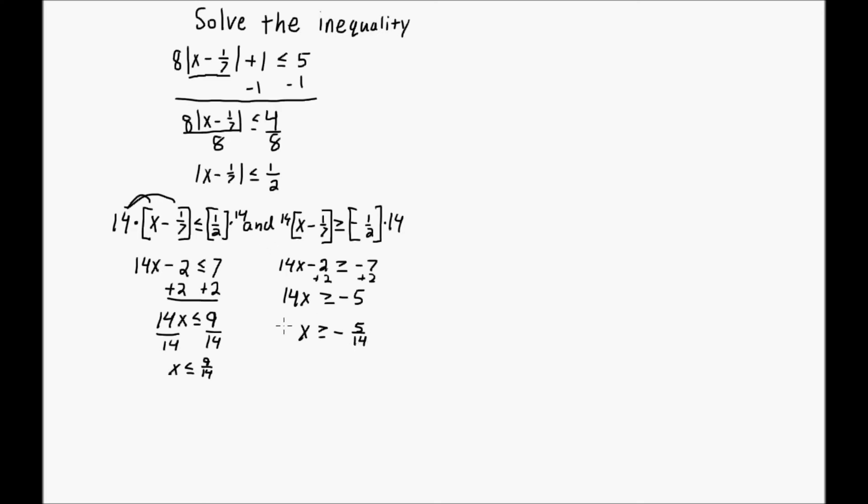All right, now there's an and here. Let's go ahead and look at the graph. Right here is 0. I have 9/14. So let's say 9/14 is right here. 9 over 14.